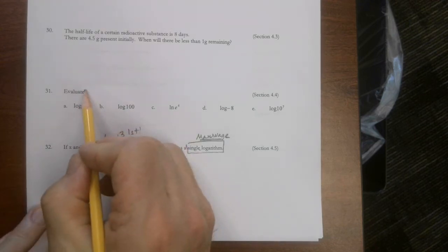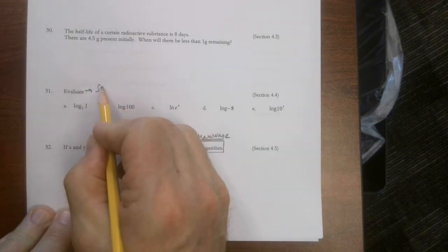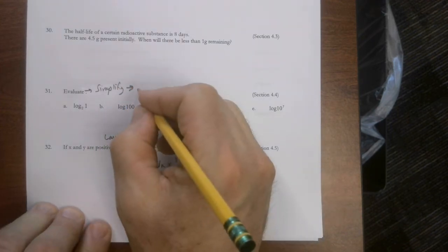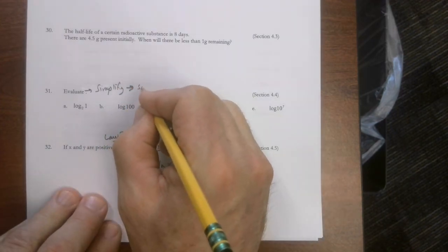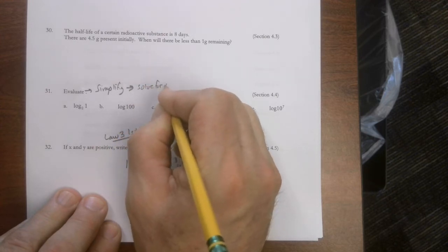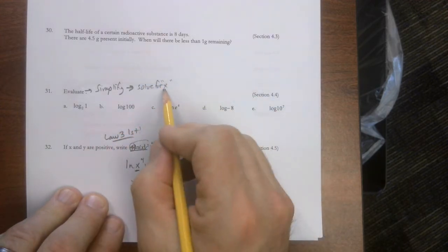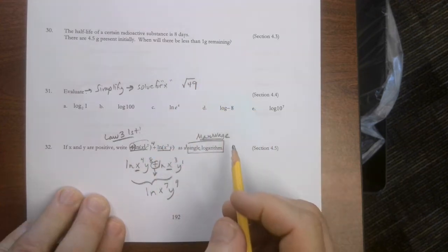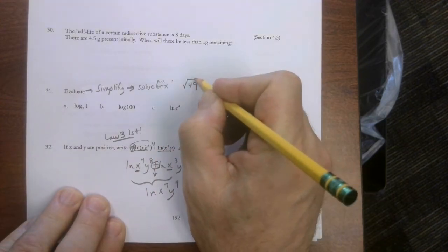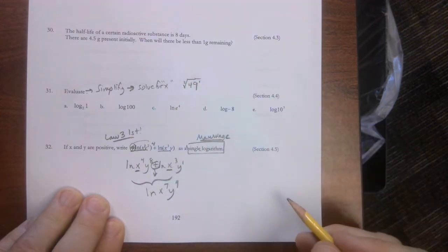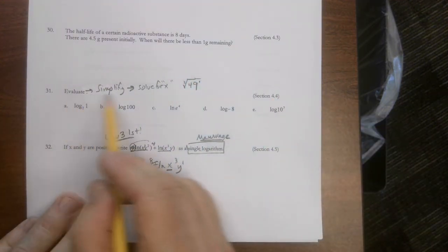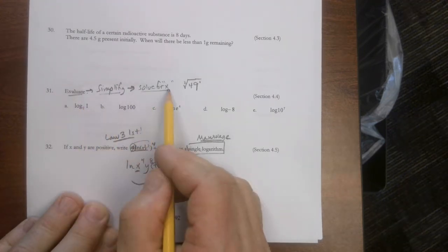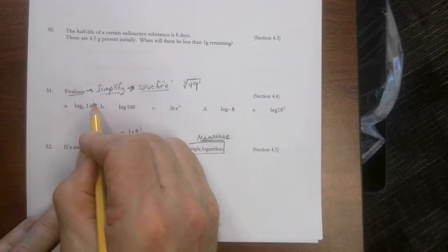All right, so here's a bunch of evaluate. Another word for evaluate is simplify. Another word for simplify is to solve for the x. Now again, don't panic. If I said the square root of 49, there's invisible stuff all over the place. There's an invisible one there. There's an invisible two there. You don't put it in there, but it's there. That's kind of what this is saying. It's like, hey, evaluate, which means simplify. It means solve for x, which means there needs to be an x there.